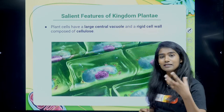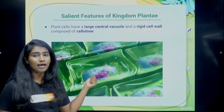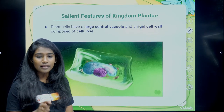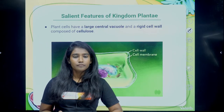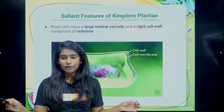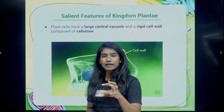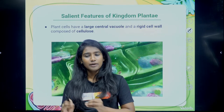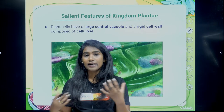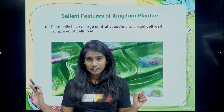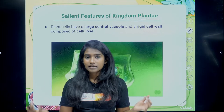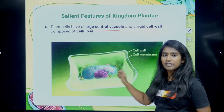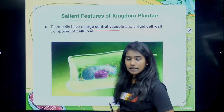In your class 9th tissue chapter, you also studied differences between plant cells and animal cells. Plant cells have a large central vacuole, a cell wall, and plastids, whereas animal cells do not. All of these — fungi, plants, and animals — have eukaryotic cells. But animals don't have cell walls and their mode of nutrition is heterotrophic.